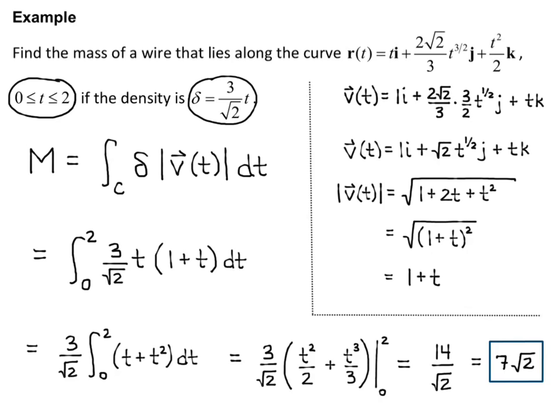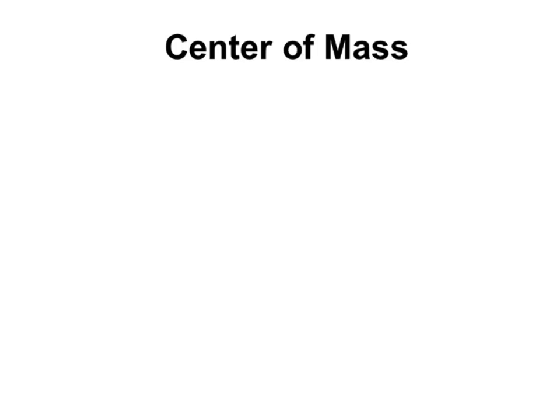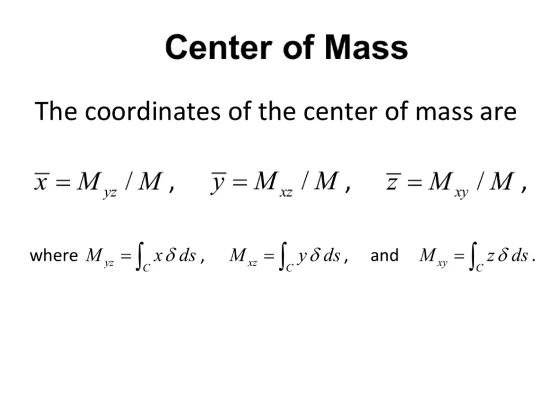We can take this further and find the center of mass. The center of mass has x, y, and z coordinates. The coordinates are: x-bar = m_yz / m, y-bar = m_xz / m, and z-bar = m_xy / m, where m_yz equals the line integral over C of x·delta ds, and m_xy equals the line integral over C of z·delta ds. Here delta is the density function and ds is the magnitude of velocity times dt.